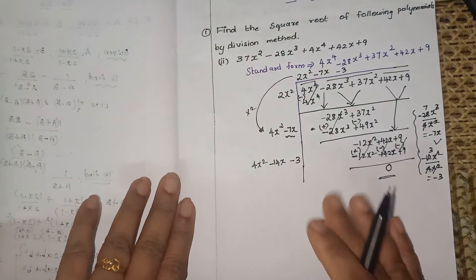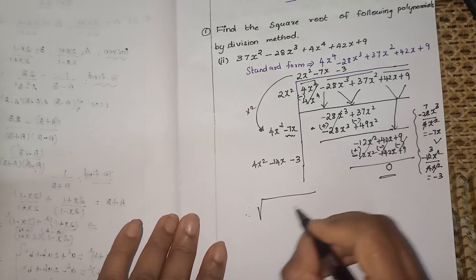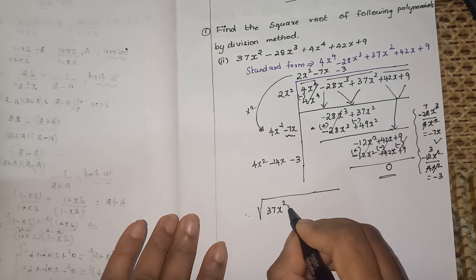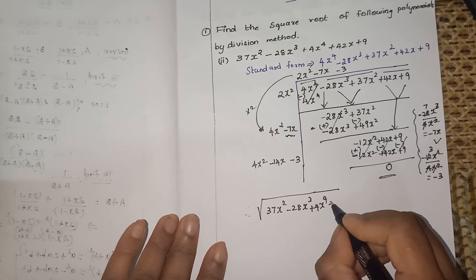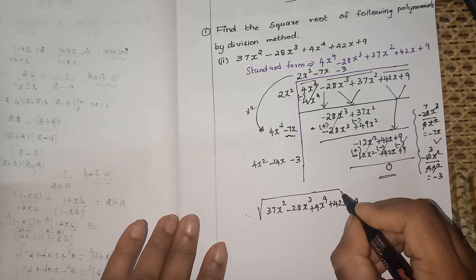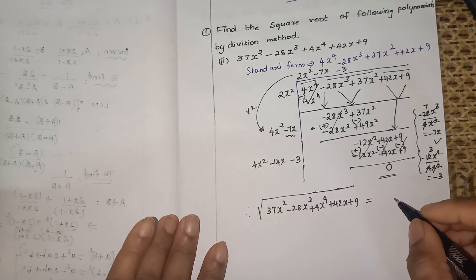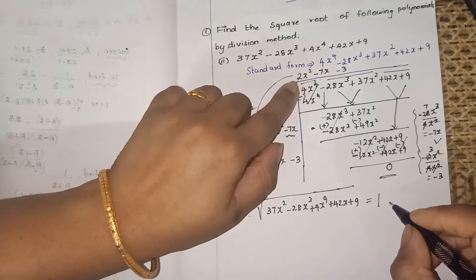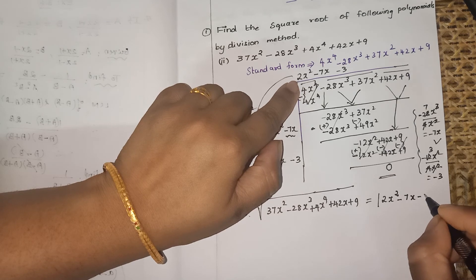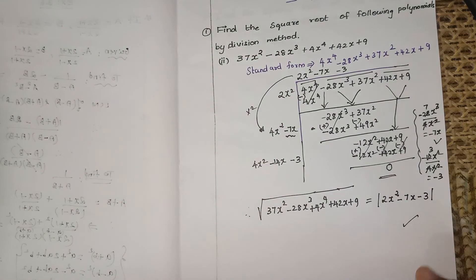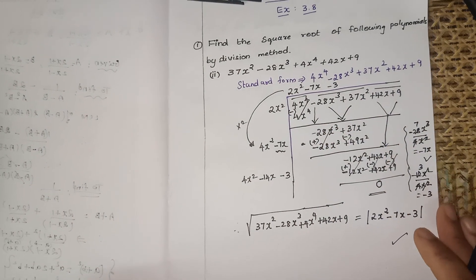The remainder is 0, so it's a perfect square polynomial. Therefore, the square root of 4x⁴ minus 28x³ plus 37x² plus 42x plus 9 equals the modulus of (2x² minus 7x minus 3). This is the final answer. Practice many questions to build confidence. Thank you, children.